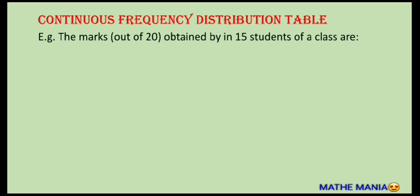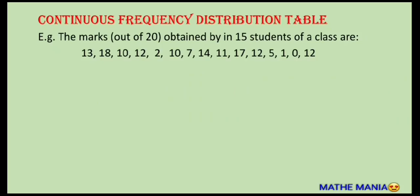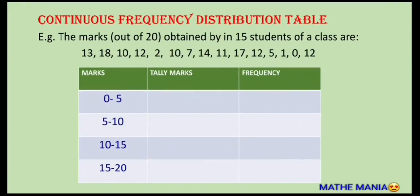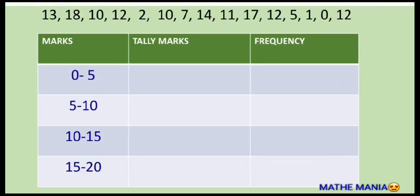Now let's discuss how to make a continuous or grouped frequency distribution table. I've taken an example containing marks obtained by 15 students. First, find the minimum and maximum values — the minimum value is 0 and the maximum value is 18. We'll make the table the same way, but instead of distinct values, we select a class size. I've taken class size 5. You must ensure your minimum value lies in the first interval and the maximum value lies in the last interval.